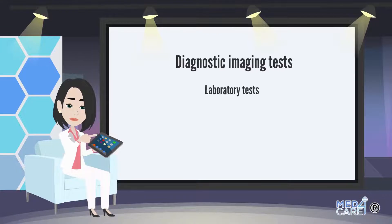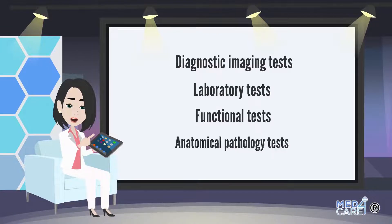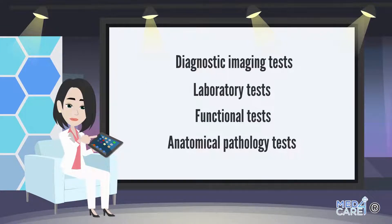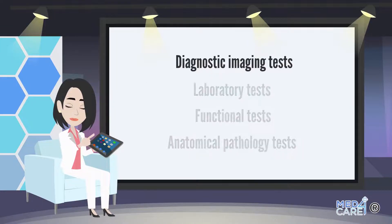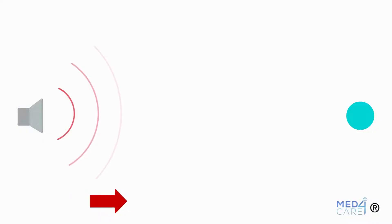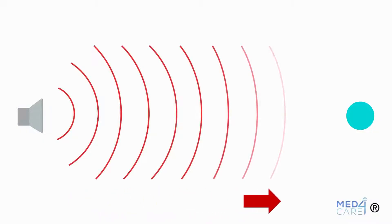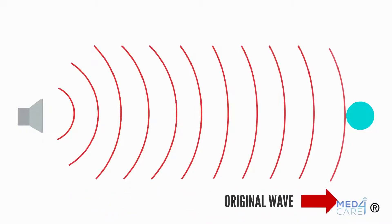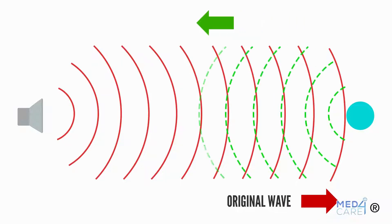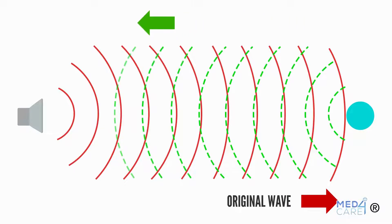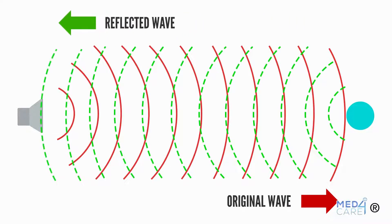For convenience, clinical trials are divided into categories. The first is represented by diagnostic imaging tests that provide an image of the affected area of the body through the use of machinery that uses waves, electromagnetic or sound, or electrically charged particles.